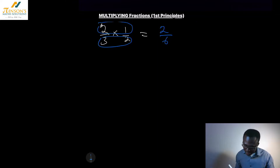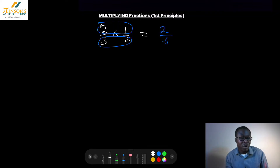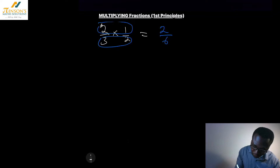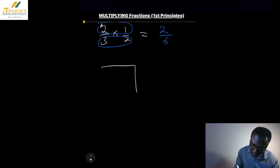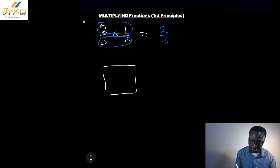We're going to look at a one by one area — a one by one square — and see how that can help us. So think of this square here. Let's assume it's a one by one, so it has an area of one metre squared.